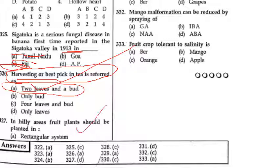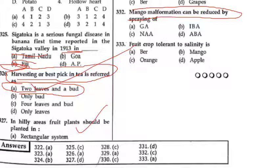Mango malformation can be reduced by — अगर mango malformation होता है तो उससे reduce करने के लिए auxin देना बढ़िया है, कौनसा type का auxin? Naphthaleneacetic acid — यह एक synthetic auxin है, NAA, याद रखेंगे. Crop tolerant to salinity — obviously salinity में bear तो होगा, Date palm (Phoenix dactylifera species). So thank you.